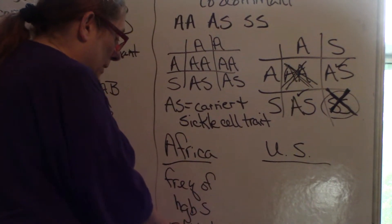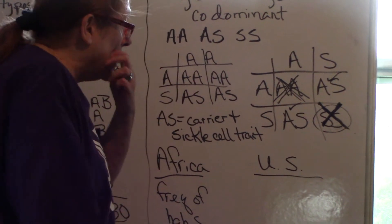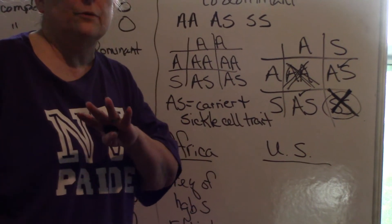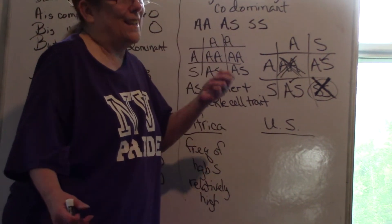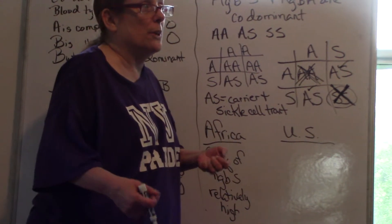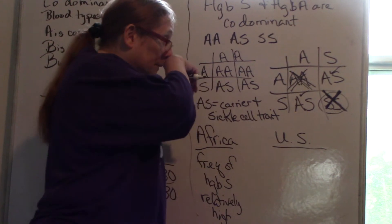So the hemoglobin S stays relatively high compared to the United States. Now, I'm not saying recent immigrants from Africa. I'm talking about people whose, and I hate to say this, a horrible time in our history, but whose ancestors were brought here during the slave trade.